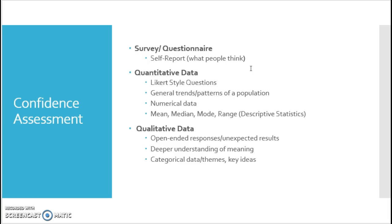So this survey, like most surveys, doesn't tell me about the explicit phenomenon but tells me what you think about it — and that's something we'll talk about more later. Surveys are very useful for getting at what people think. This survey also utilized different types of questions: some open-ended questions, and questions that asked you to rate yourself from one to five. Those rating questions are Likert-style questions and they provide quantitative data.